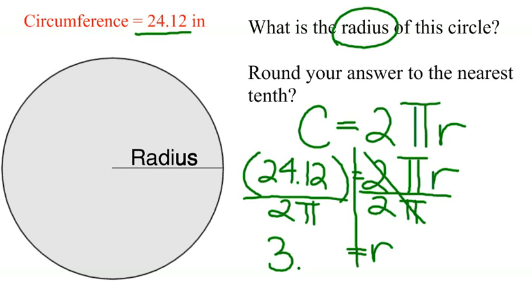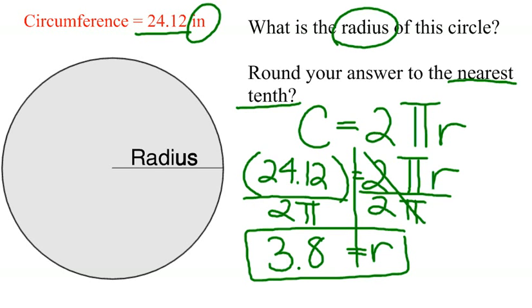And your answer is 3.838 and so on. You have to round your answer to the nearest tenth. That means one digit after the decimal point and that digit here is 8. That means your radius is 3.8 inches because your circumference was given in inches.